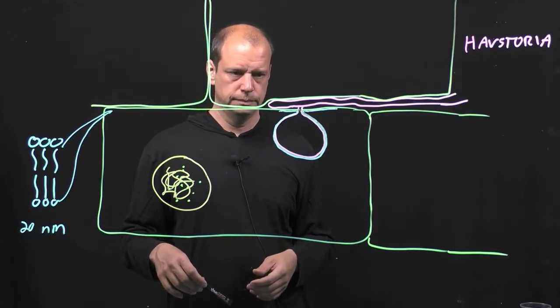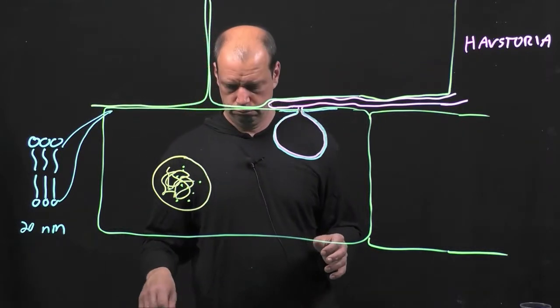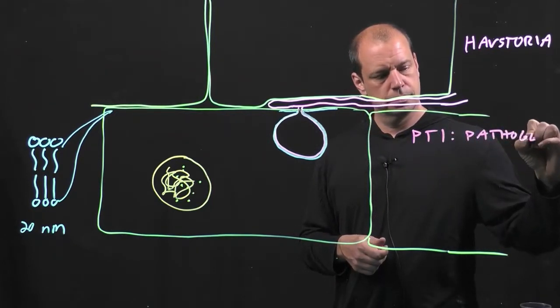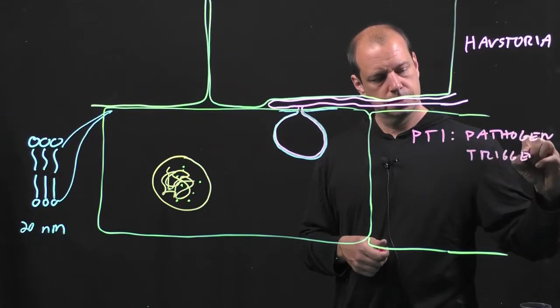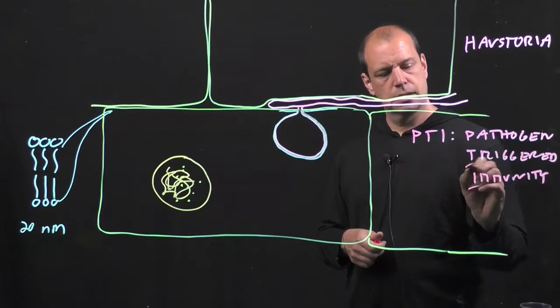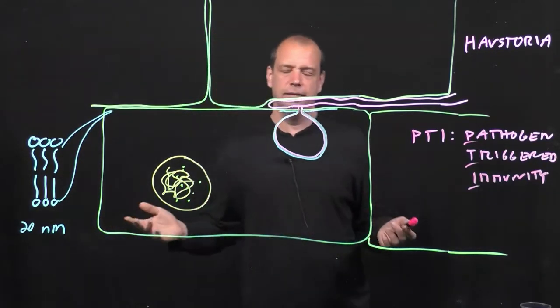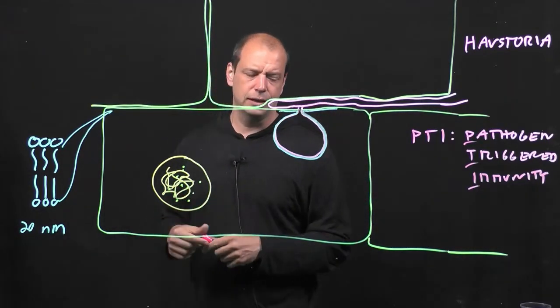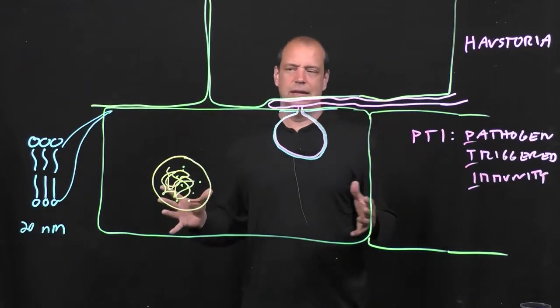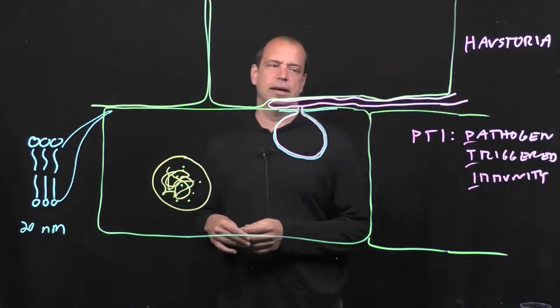So, the first line of defense that a plant has is typically called PTI, pathogen triggered immunity. And here it's worth noting that most plants are resistant to most pathogens. Bremia lactucae is named because it only colonizes lettuce, I think. There are other oomycetes that can colonize hundreds of plant species. But it's quite rare for a pathogen to colonize thousands of plant species. Usually, it's a very targeted range that it's able to successfully colonize.